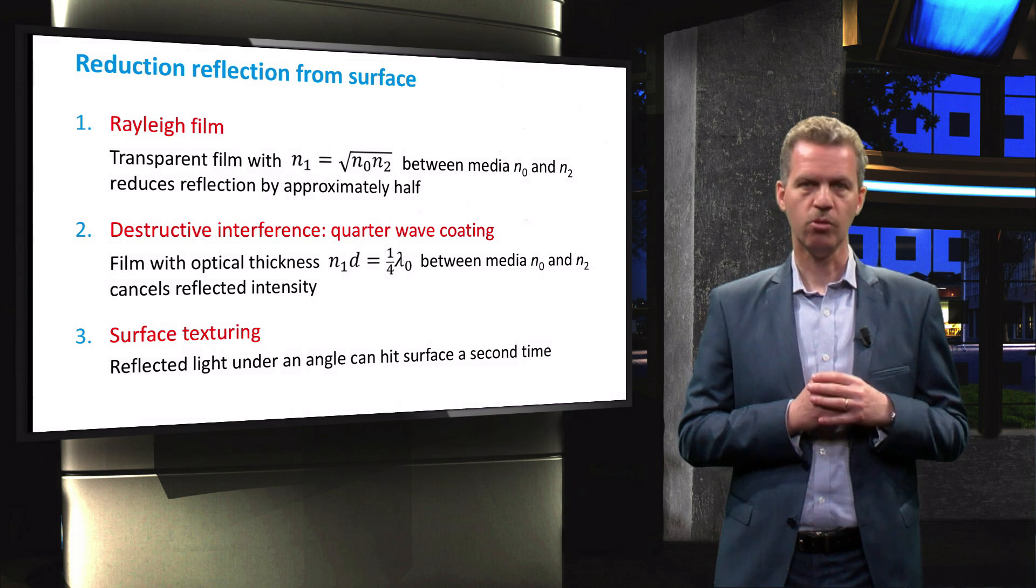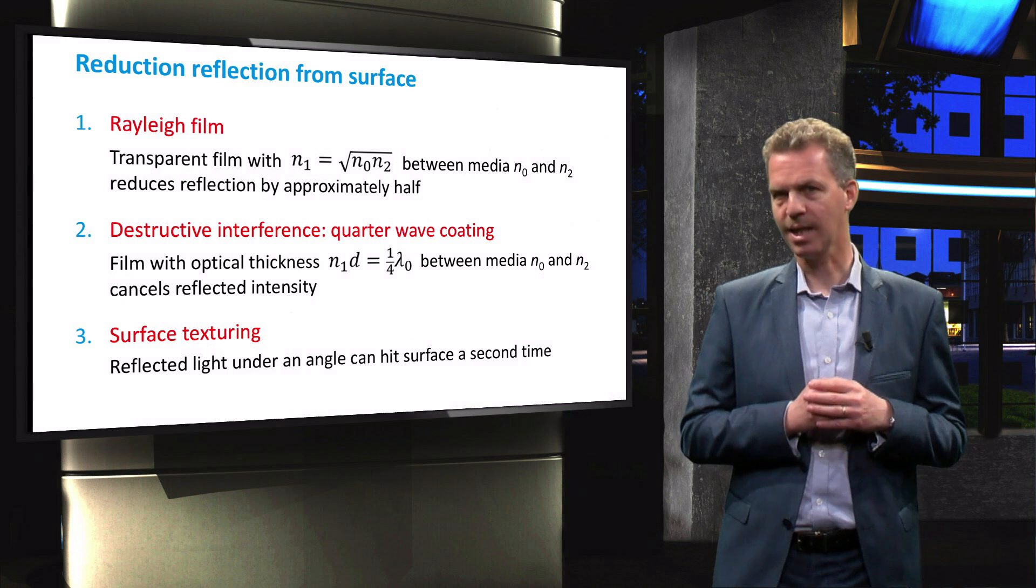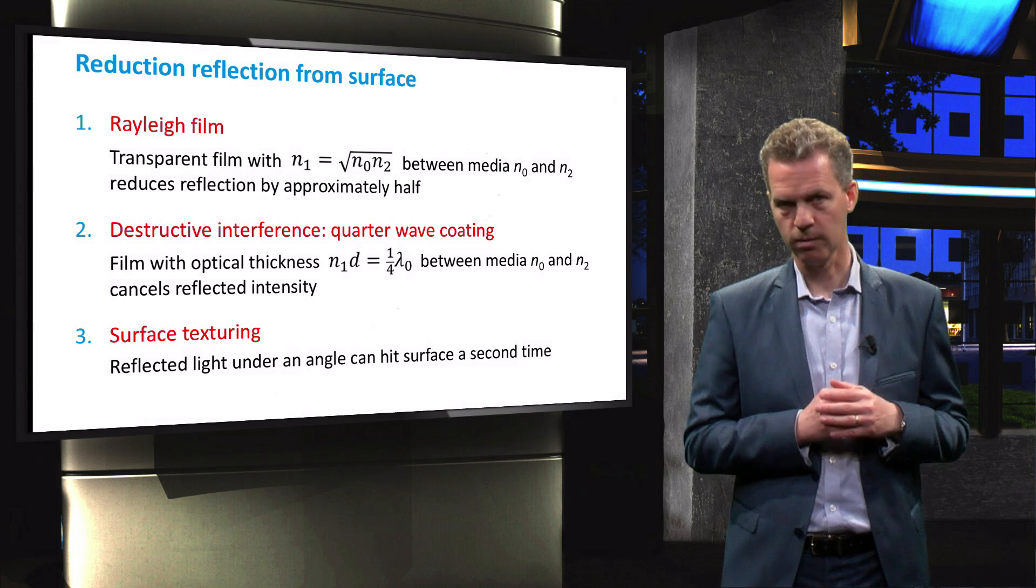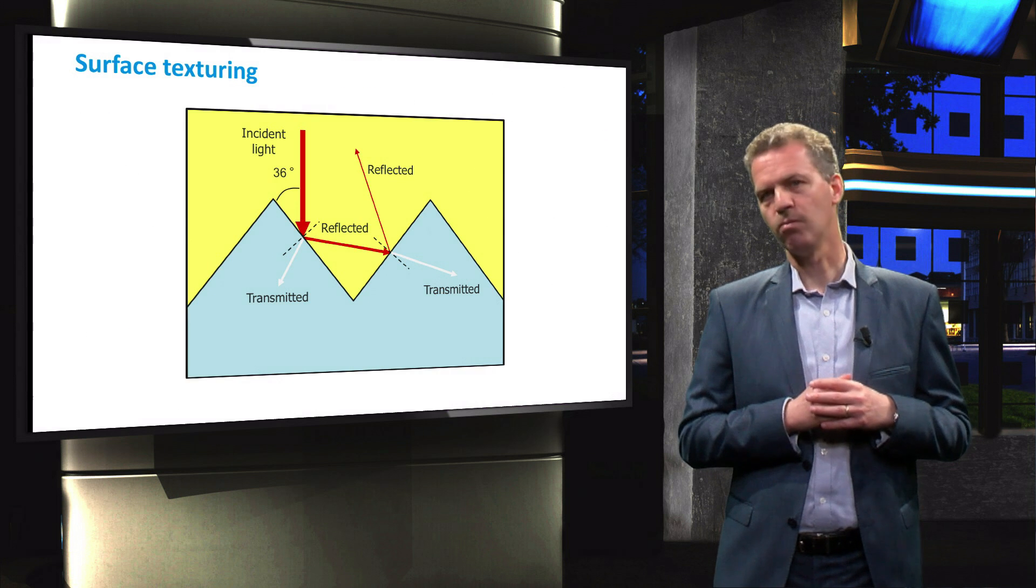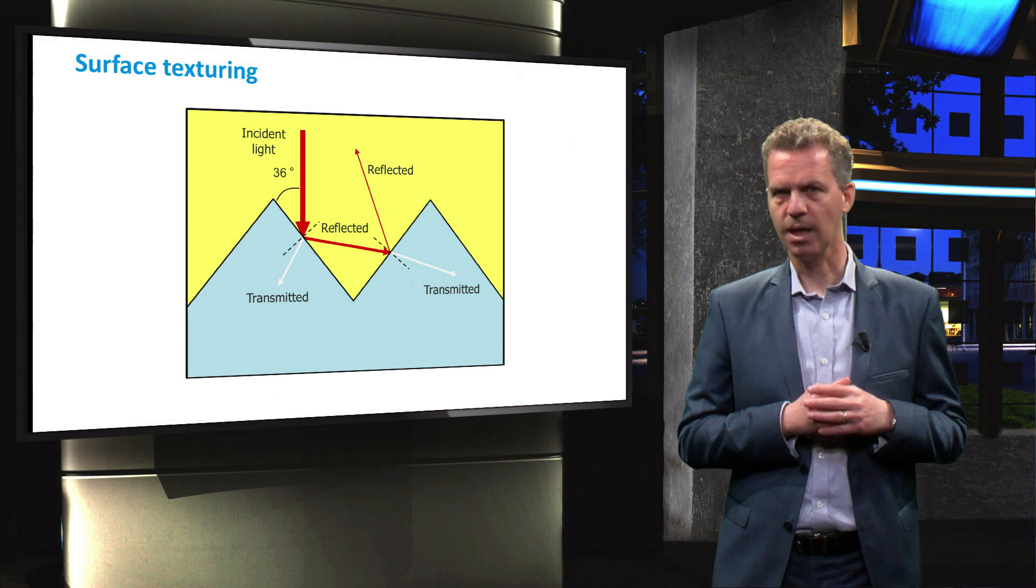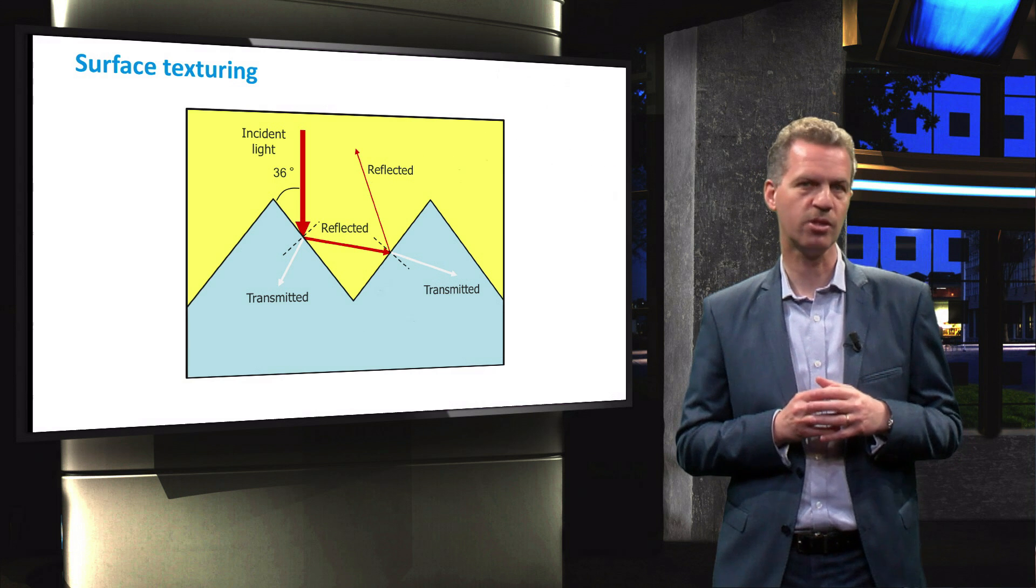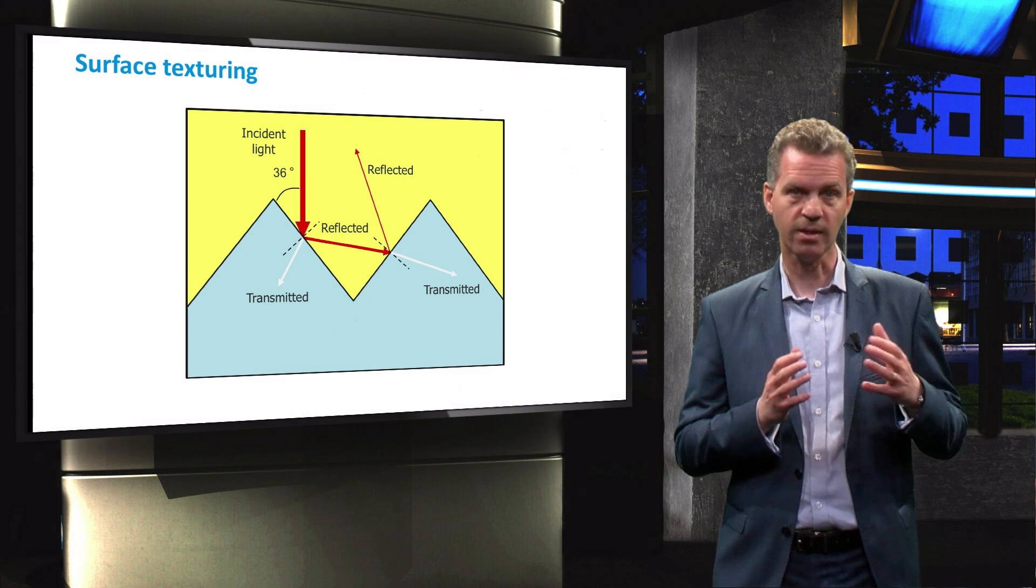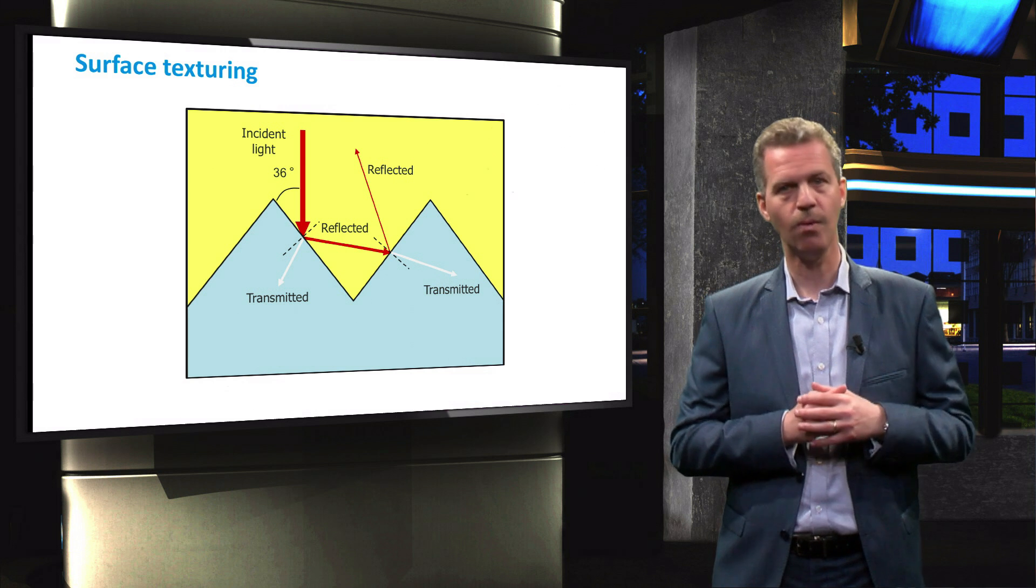The third method to minimize reflection is by texturing the wafer surface. Incident light that is reflected at a textured surface can be reflected at angles such that it is incident somewhere else on the surface where it can still be coupled into the silicon wafer.